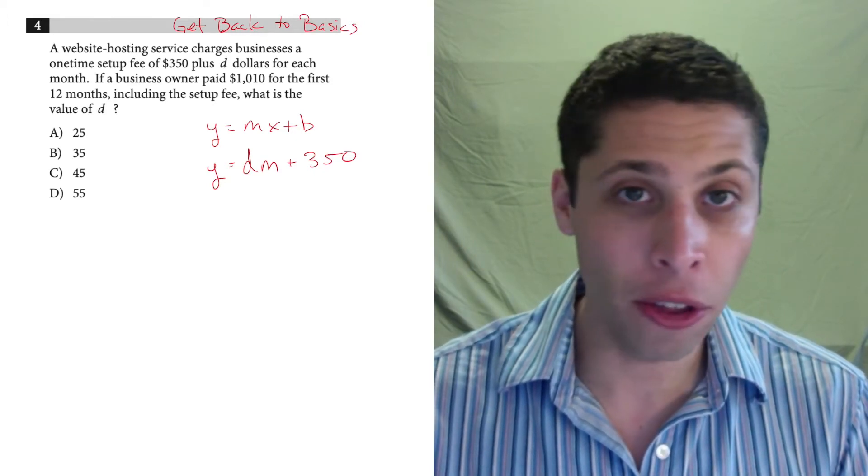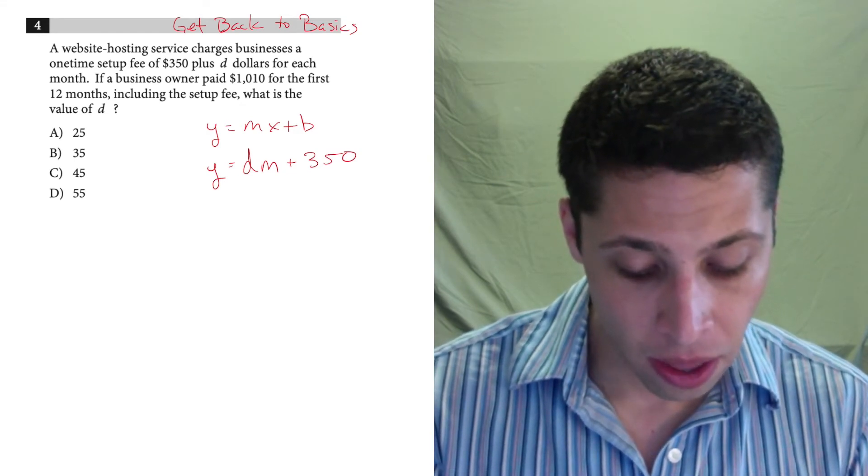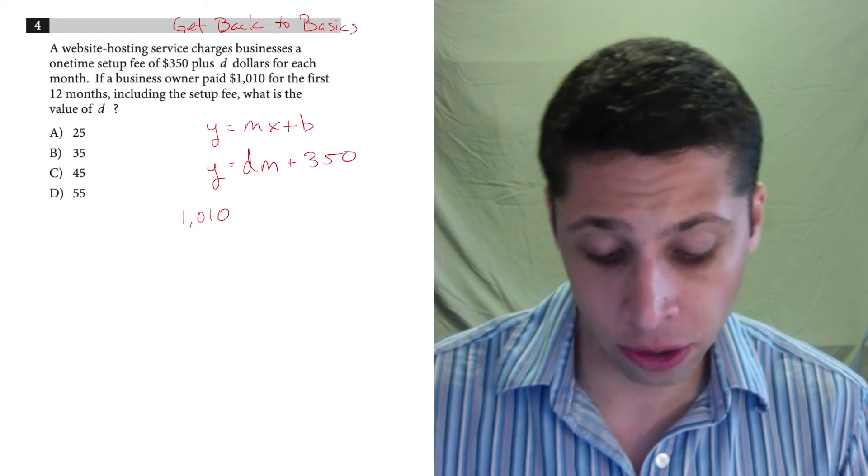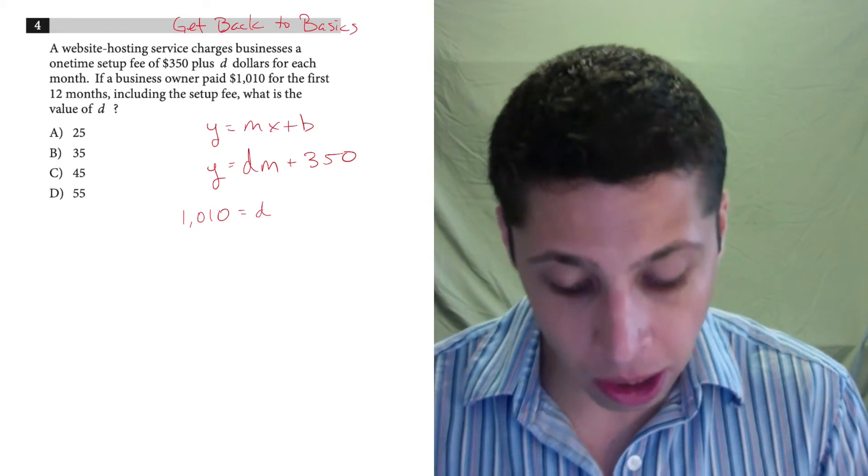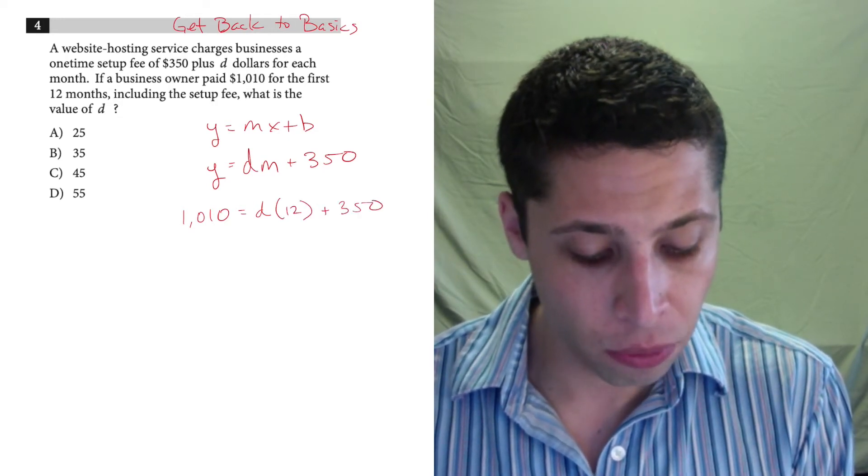But we also have other numbers that we can fill in from this question because they tell us that what the person paid is $1,010, so that would be your result, your Y. We still don't know the slope, but we do know that there are 12 months for this contract.